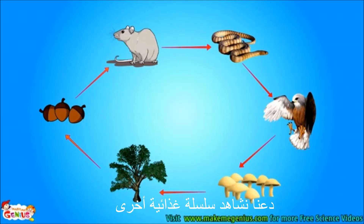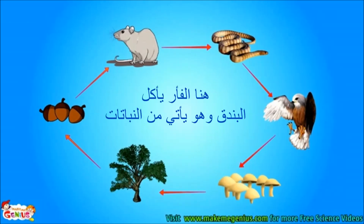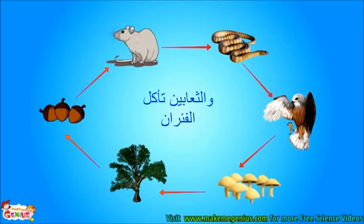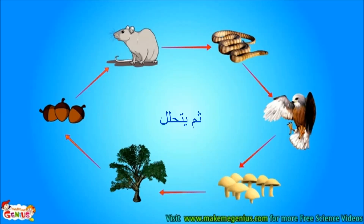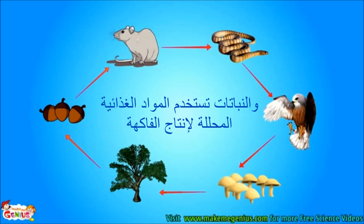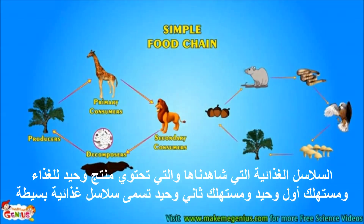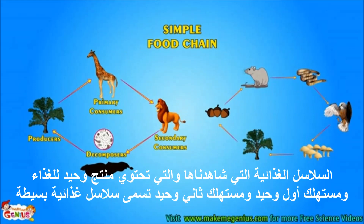Let us see another food chain. A rat eats acorns fruit, which comes from a plant. A snake eats rats. An eagle eats the rat. The eagle dies, it gets decomposed, and plants use decomposed nutrients to produce fruit. The food chains which have one producer, one primary consumer, and one secondary consumer are called simple food chains.